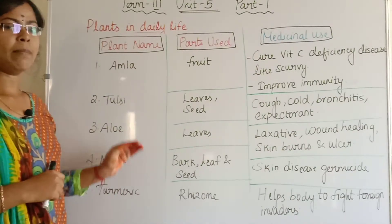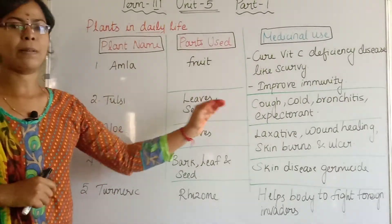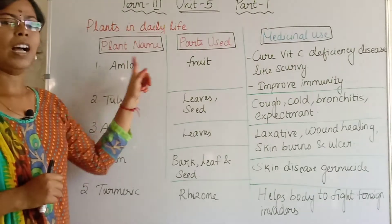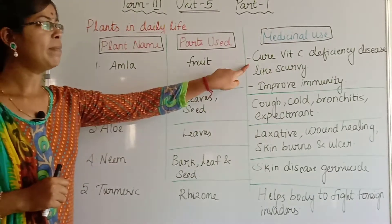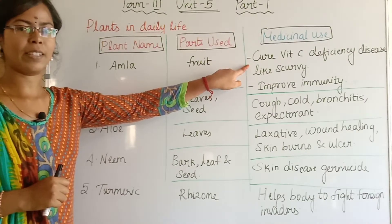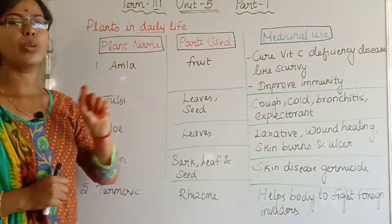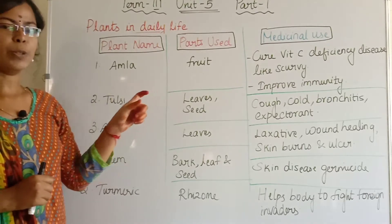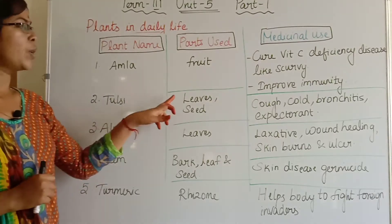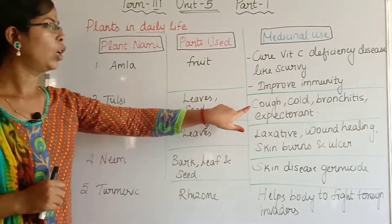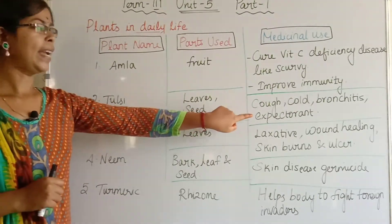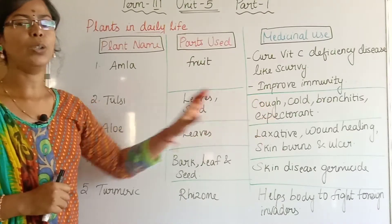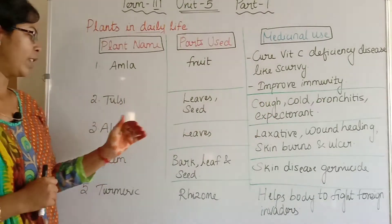Let's see some plant names used for medicinal purposes. First is amla (nelika) — its fruit is used to treat vitamin C deficiency like scurvy and to improve immunity. Next, tulasi (holy basil) — its leaves and seeds are used to treat cough, cold and bronchitis.